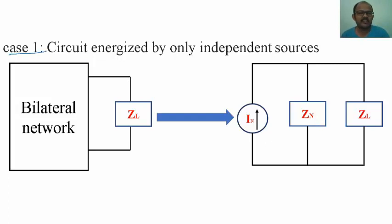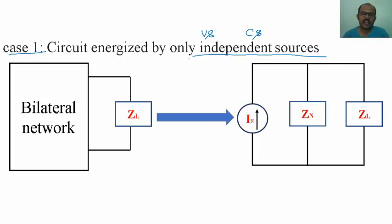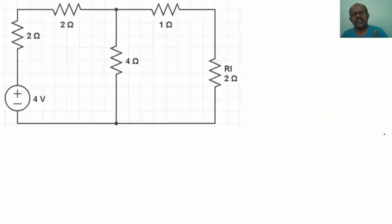Case 1 states: circuit energized by only independent sources — a voltage source and a current source in a practical circuit. The entire bilateral network can be replaced by Norton's current, Norton's impedance, and load impedance.